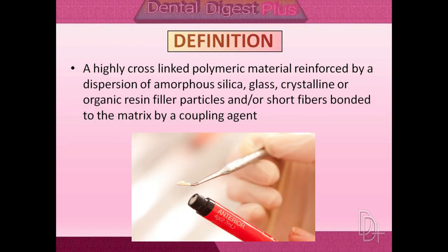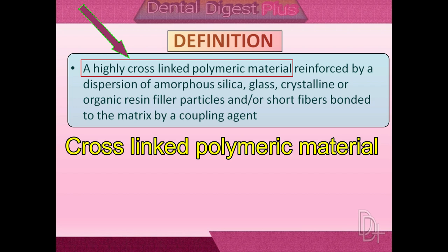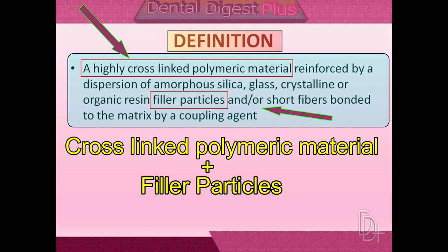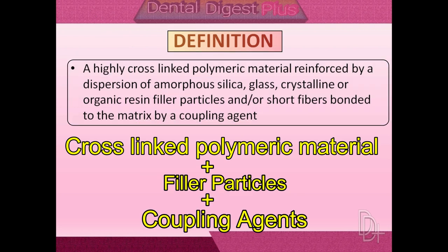Now let's see the definition of composite material. One part of composite material is formed by a cross-linked polymeric material in which filler particles like silica and glass have been added, and these filler particles are attached to the polymer with coupling agents. Composite is a highly cross-linked polymeric material which is reinforced by a dispersion of amorphous silica, glass, and resin filler particles, bonded to the matrix by a coupling agent.